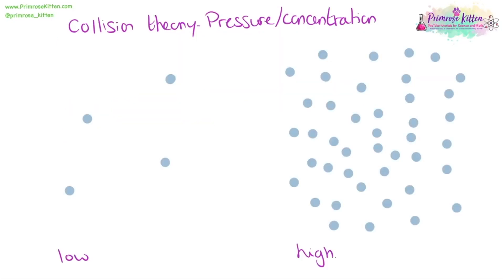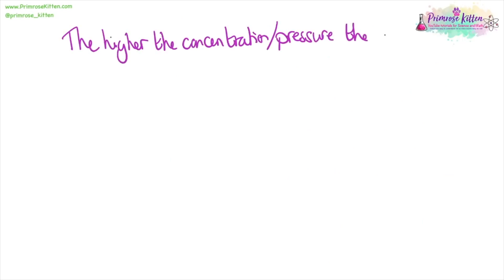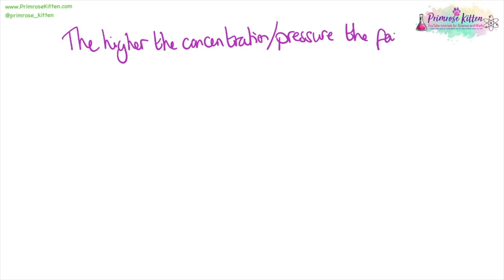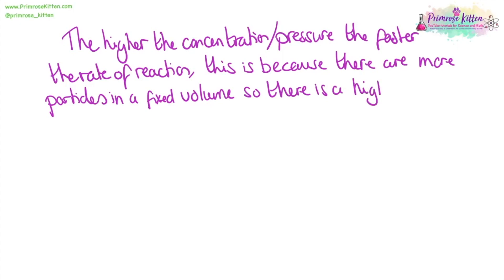If we have things at high pressure or at a high concentration, there are more of them, which means they're much more likely to bump into each other and react. Whereas at a low concentration, they're not very likely to react. We can say that the higher the pressure or concentration, the faster the rate of reaction will be. This is because there are more particles in a fixed volume, so there is a higher chance of a successful collision.